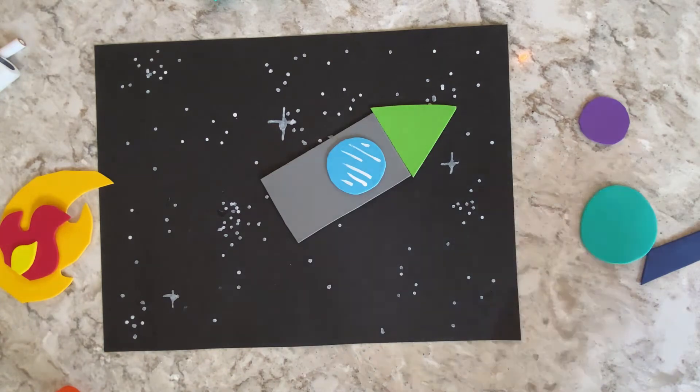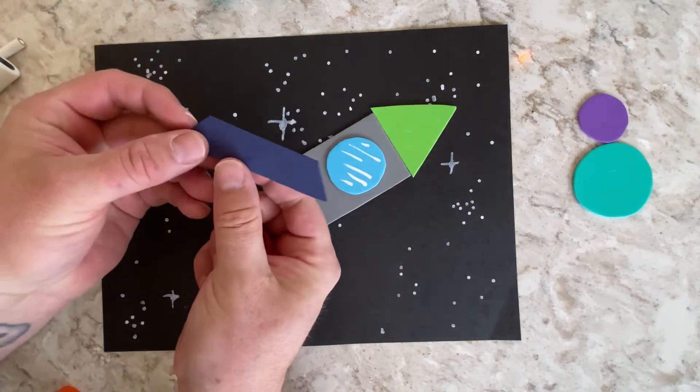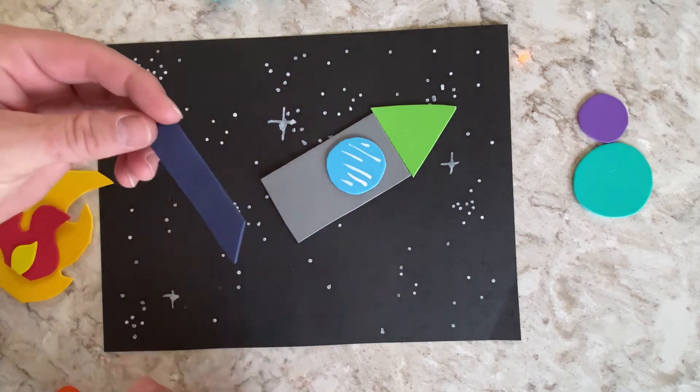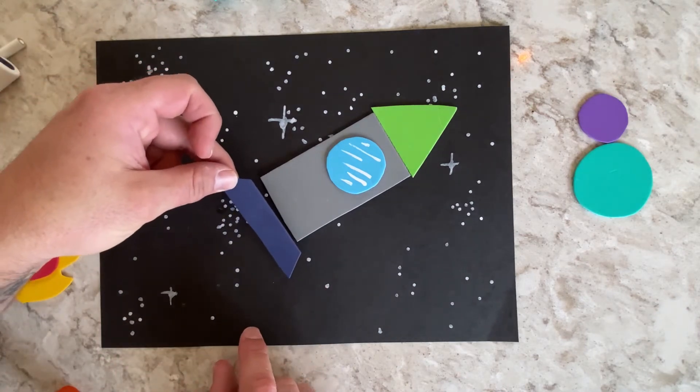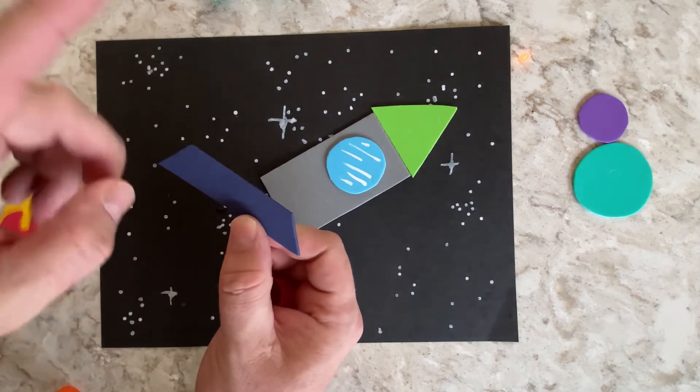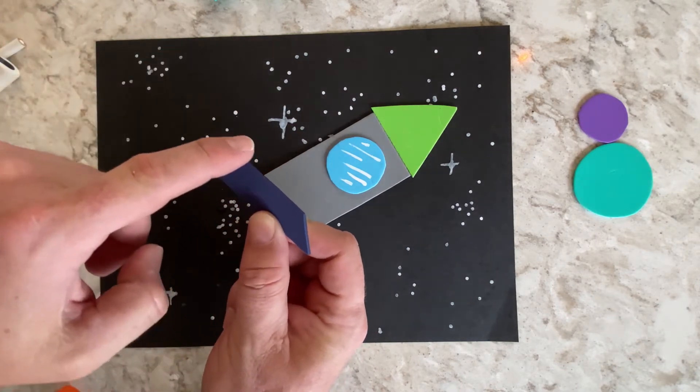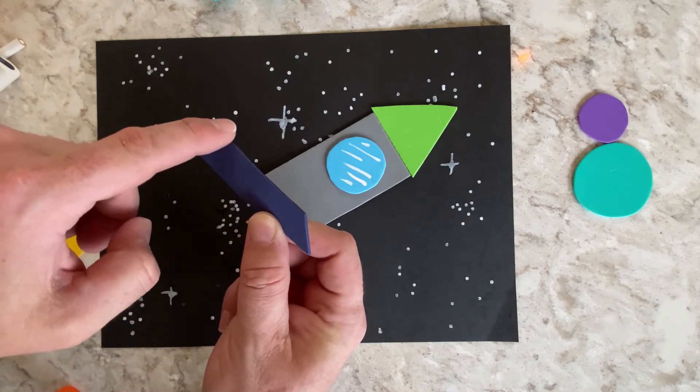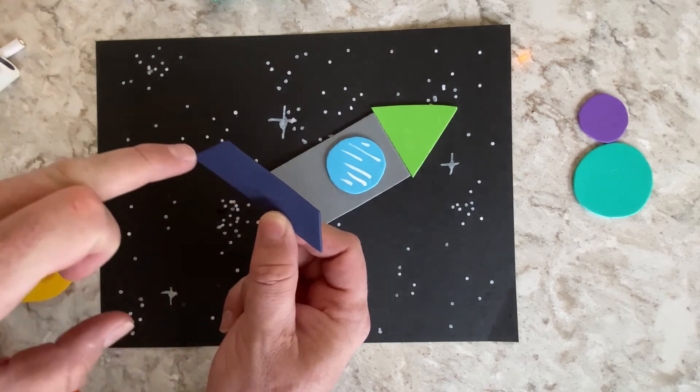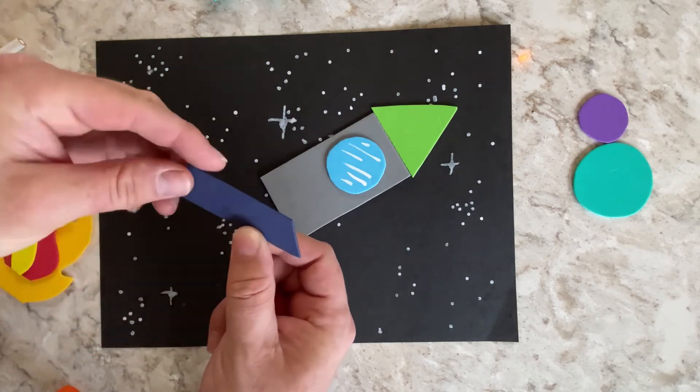Now, this shape right here is called a trapezoid, and I'm using it for my rocket combustion chamber, where the fire comes out. The way that you make a trapezoid is you're going to put a line right here, two diagonal lines that come off of that line, and then another parallel line.